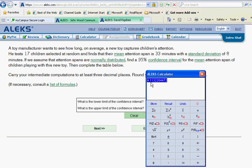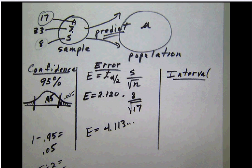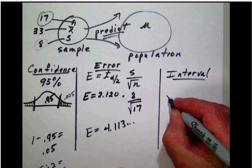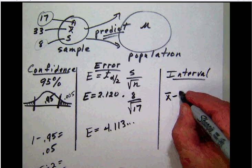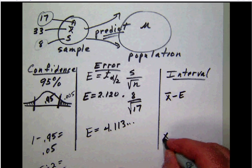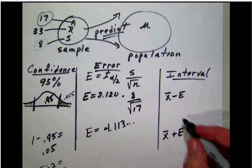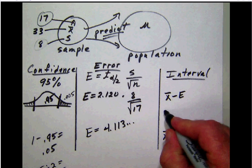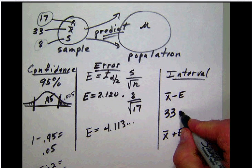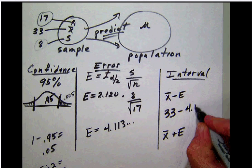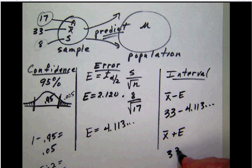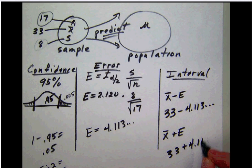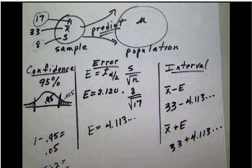As we head over then into our final step, we will notice here that our interval is going to be our x bar minus the error and of course we're going to have x bar plus the error. Our x bar then is the sample mean which we said was 33, and we're going to subtract this 4.113 number and then of course we're going to add that, but ALEKS can do that for you all in one step.